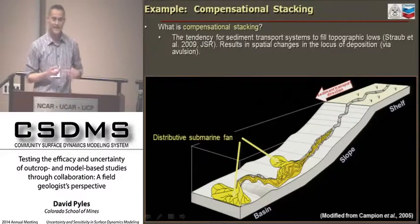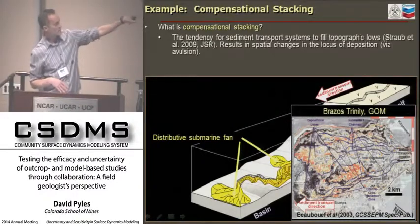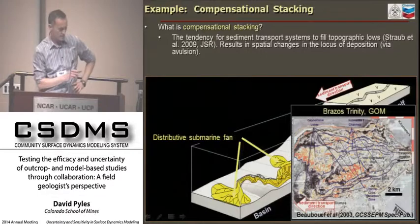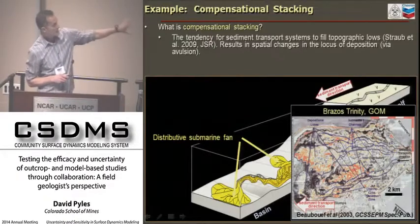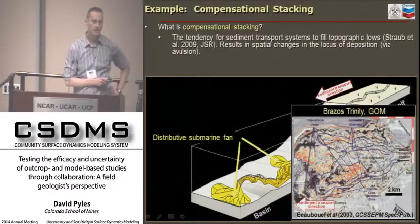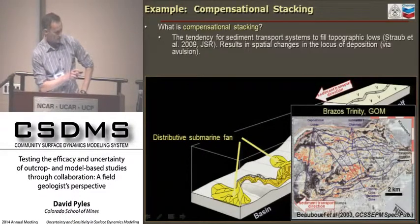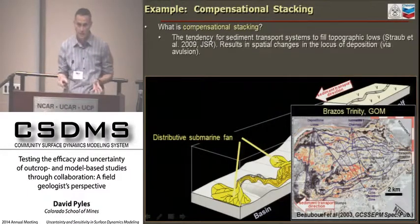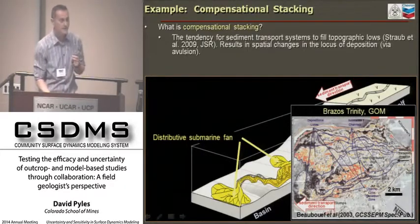These fans can happen in intraslope mini-basins such as salt-withdrawal basins in the Gulf of Mexico, in extensional basins such as those offshore California, and out on the basin floor. They contain channels and lobes that form a radially dispersive pattern. Shown here is a seismic image from Rick Boboff's study of the Brazos Trinity system. What you're seeing is amplitude data—the orangish colors reflect sandstone, whereas the grayer colors reflect mudstone. Channels are entering the basin on the right and forming a radially dispersive pattern where they transfer to lobes.